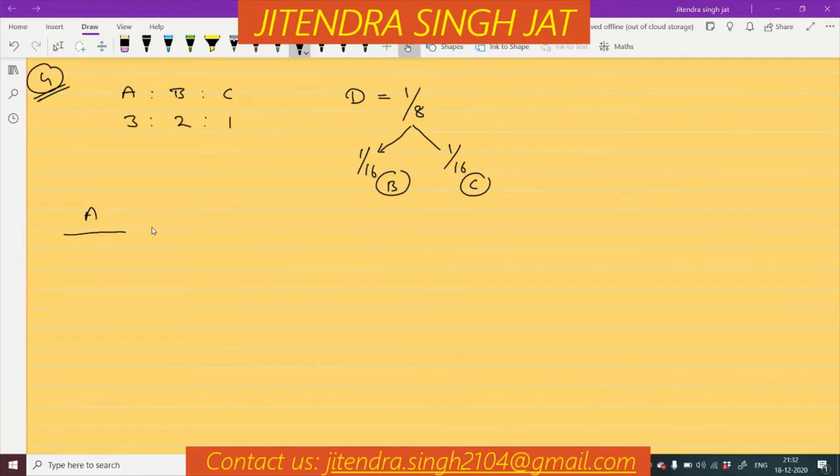What is A's share? A's existing share was 3 by 6, so 3 by 6. And A is not sacrificing anything. B's existing share is 2 by 6. How much B is sacrificing? 1 by 16 in favor of D, so minus 1 by 16. C's share is 1 by 6, minus 1 by 16 that C is sacrificing. And what is D's share? It is given directly, 1 by 8.